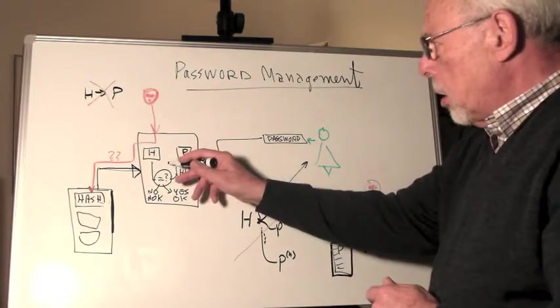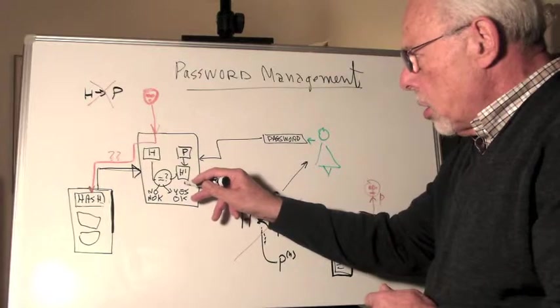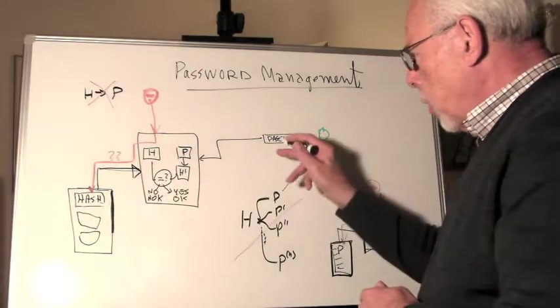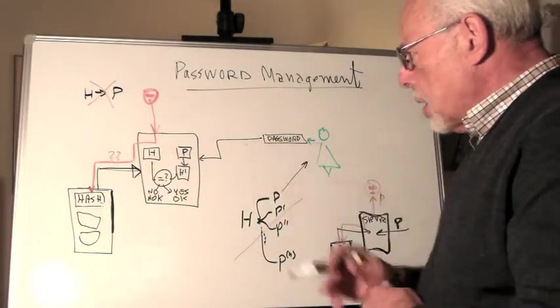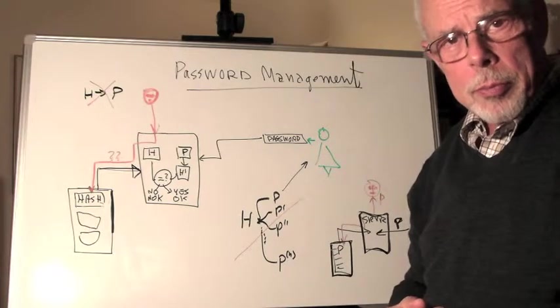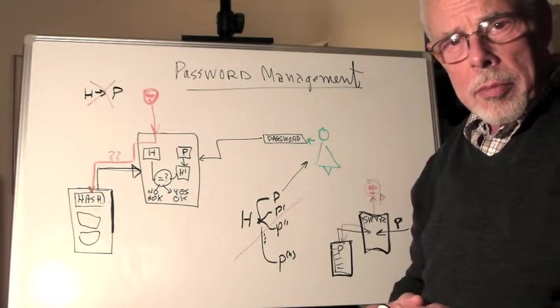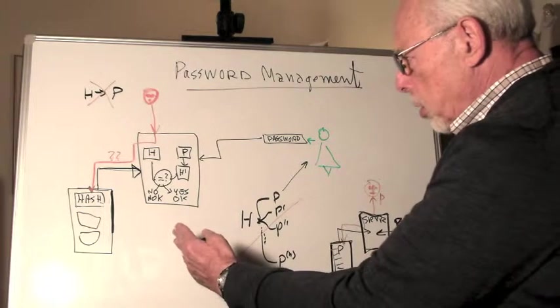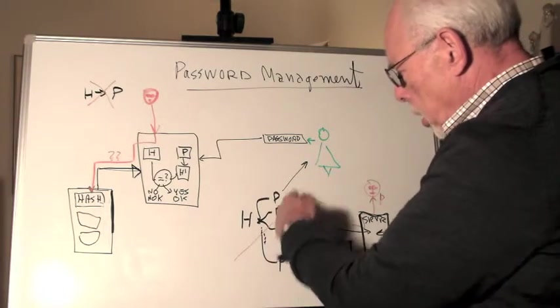And the server, who compares the hash in the file to the hash computed from the submitted password, would accept it. So, the disadvantage here is that the hacker has a choice.